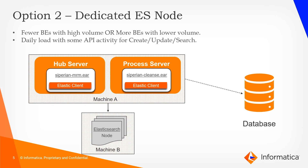The second option that we have is having a dedicated Elasticsearch node. Here, as you can see in the diagram, we have two machines — machine A and B. Machine A hosts the hub and process server, essentially your MDM installation. And we have a dedicated machine which hosts the Elasticsearch service. This kind of architecture is ideal for environments which have very few number of records, fewer BEs, and they see not a lot of volume in terms of daily loads, API activities for creates, updates, and searches.